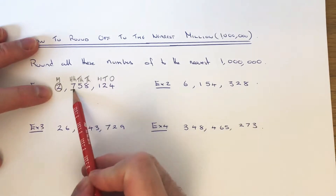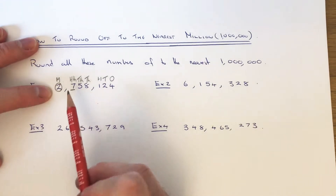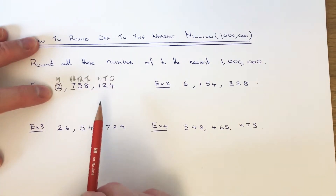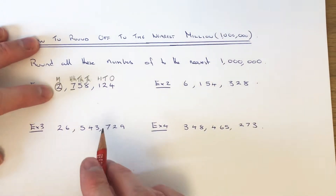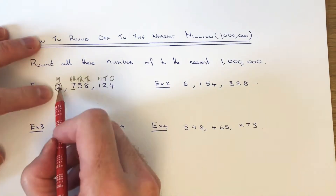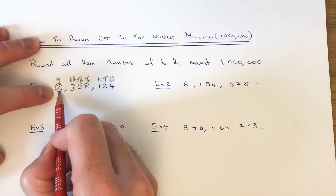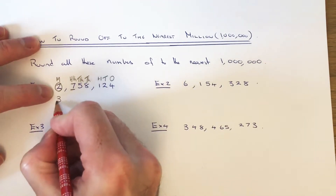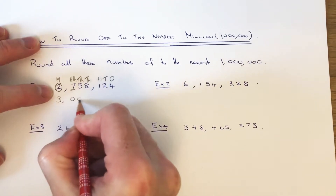So this number is a 7, so it's definitely 5 or above. This means our answer will be closer to 3 million.